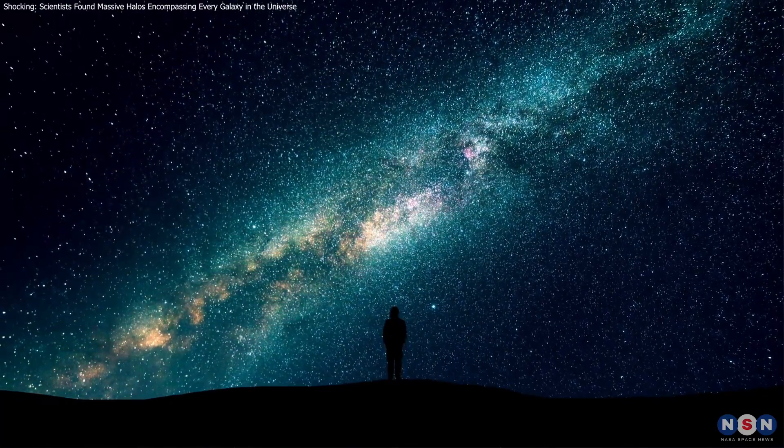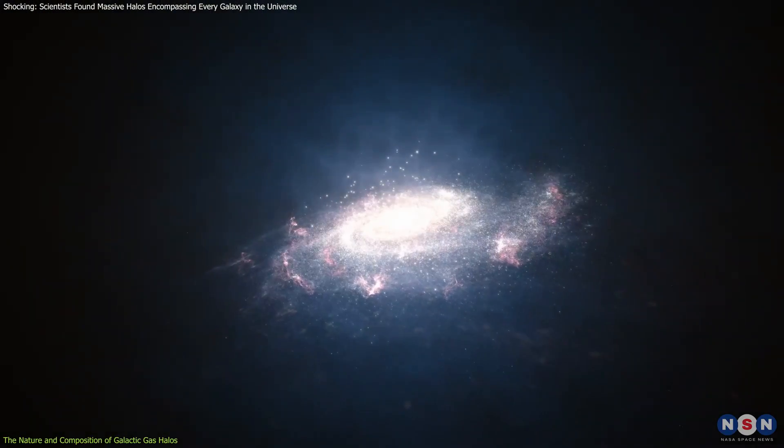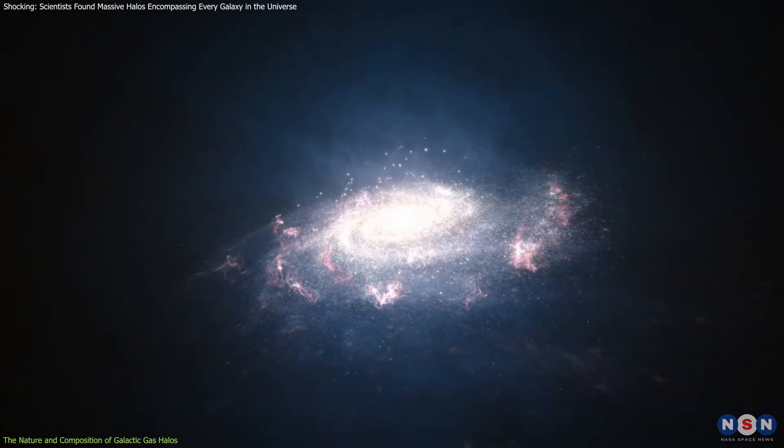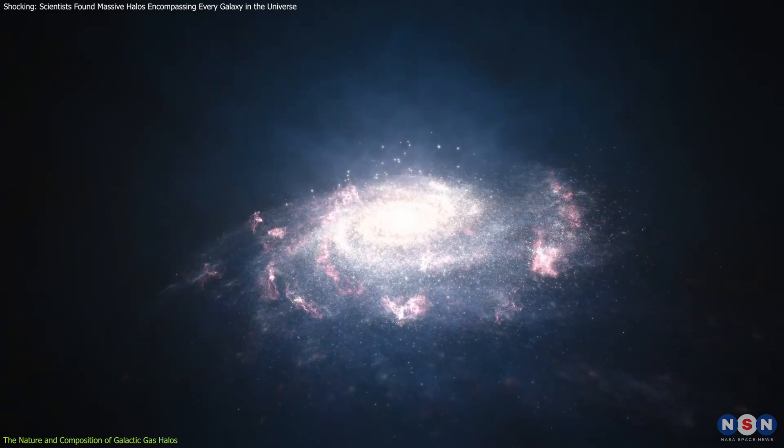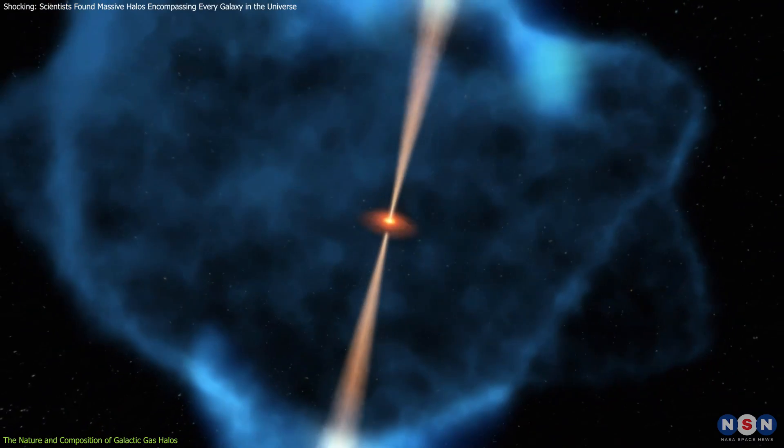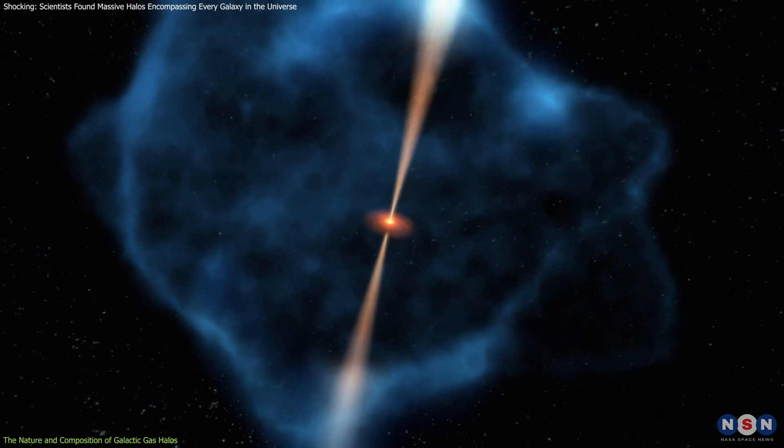Galaxies are much more than the bright stars we see dotting the night sky. Surrounding each galaxy is a colossal shroud of gas, known as a galactic halo, that extends far beyond the visible boundaries of the galaxy. Recent observations have shown that these halos are more massive and far-reaching than we once believed.